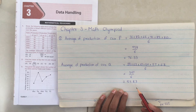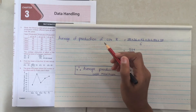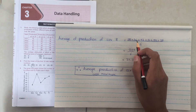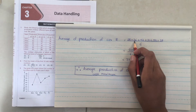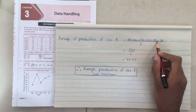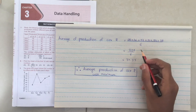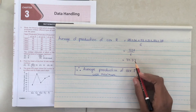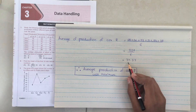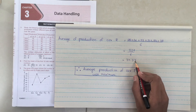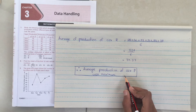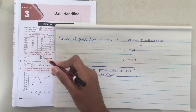Now we have to find the average production of car R. So: 28 + 36 + 42 + 31 + 49 + 38 divided by 6. When we add, we get 224 divided by 6, which is equal to 37.33. So we can see that the average production of car P was maximum, which is option B.